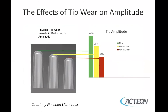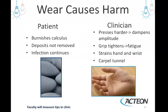There are effects of tip wear on amplitude. Over time, tips wear — whether magnetostrictive or piezo. When they wear one millimeter, they are only 75 percent efficient; if they wear two millimeters, they are only 50 percent efficient. It's critical for clinicians to measure their tips. For the patient, worn tips cause burnished calculus, deposits not removed, and infection can continue. For clinicians, worn tips lead to pressing harder, gripping tighter, causing fatigue, strain of the hand and wrist, and potentially carpal tunnel.